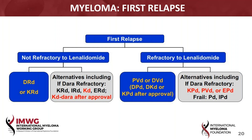We treat each patient individually. The good thing is that we really have several options that will address patient preference, patient medical conditions, and the type of relapse — the biology of their disease. Your algorithm here is interesting based on refractory versus non-refractory, but we also have to pay attention to whether it's a biochemical relapse, where just your myeloma markers are going up, or a symptomatic relapse.